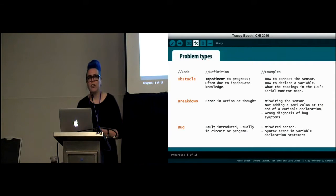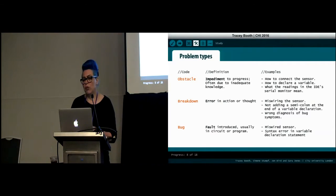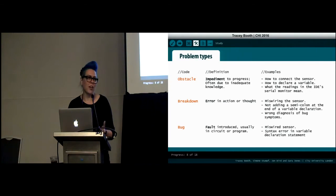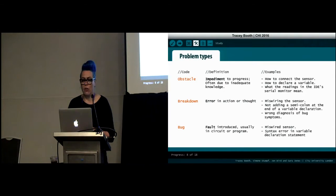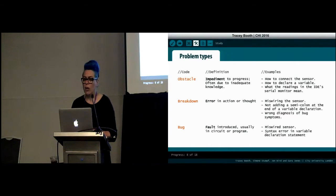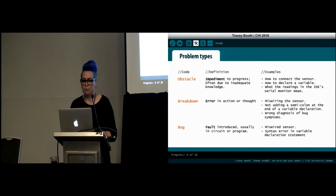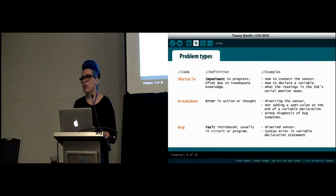We coded the video transcripts for evidence of problems with a coding scheme inspired by Andy Koh and Brad Meyer's work on classifying programming errors. We coded obstacles where participants hit barriers to overcome, often due to knowledge gaps. We coded breakdowns on evidence of errors in either action or thinking. And we coded bugs for faults or errors introduced in the circuit or the program. As in Koh and Meyer's work, there could be chains of problems — for example, an obstacle might lead to a breakdown which could result in a bug.